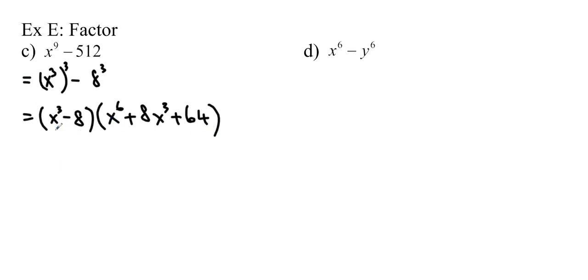But this is x cubed minus 8. So we do have to keep going with it, because 8 is actually 2 cubed. So we get x minus 2, times x squared, plus 2x, plus 4, times the other part, x to the 6, plus 8x cubed, plus 64.